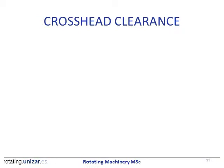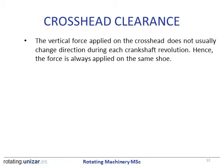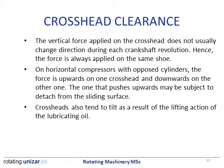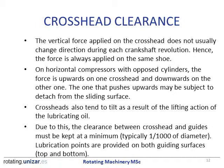Crossheads slide on guides built into the frame, so clearance must be carefully considered based on the forces involved. The vertical force applied to the crosshead usually does not change direction each revolution, so the force is always applied on the same shoe. On a balanced compressor with opposed cylinders, the force is upward on one crosshead and downward on the other. The one pushed upward may tend to detach from the sliding surface. Crossheads also tend to tilt due to the lifting action of lubricating oil. As a consequence, the clearance between the crosshead and the guides must be kept at a minimum — typically 1/1000 of the diameter — and lubrication points are provided on both top and bottom guiding surfaces.